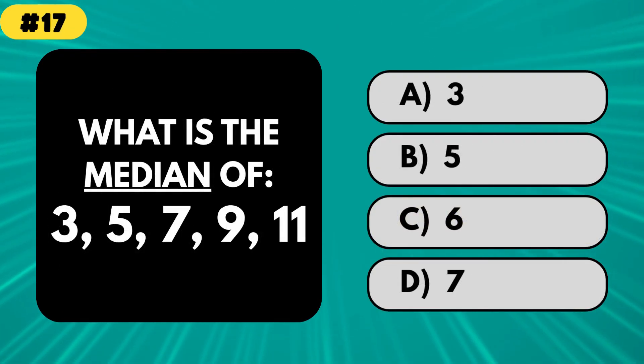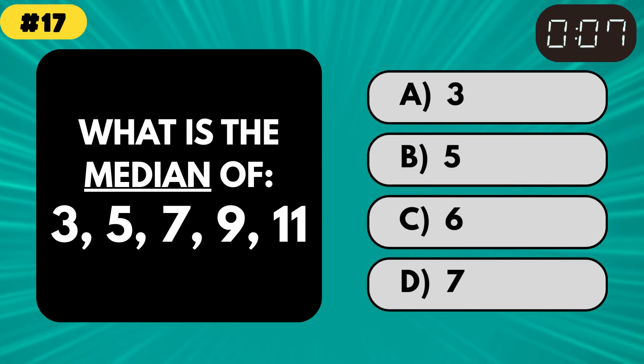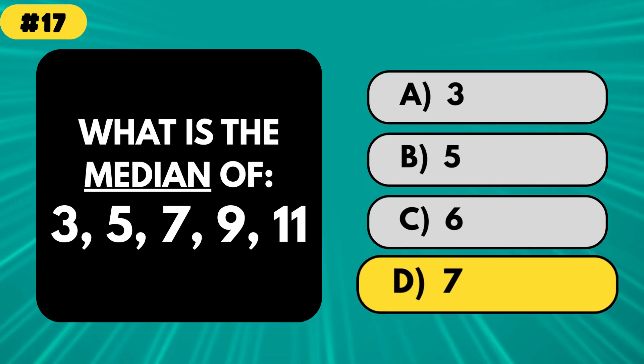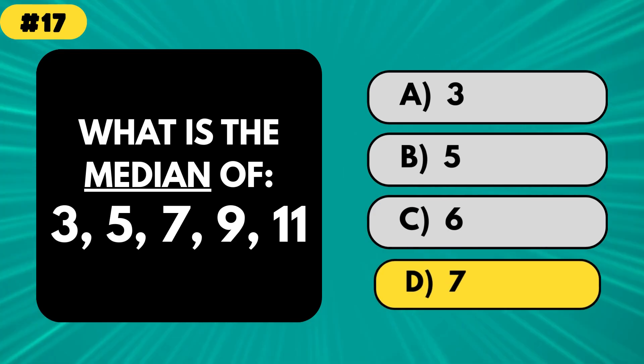What is the median of 3, 5, 7, 9, 11? The answer is 7. Median equals middle number, like the peanut butter in a math sandwich.